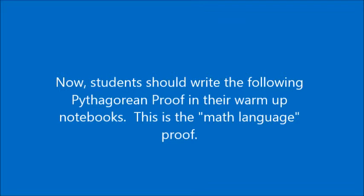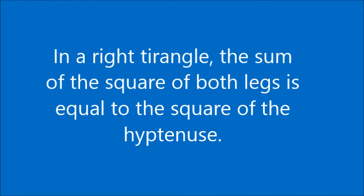Now that we have our class definition of the proof down, I would like you please to write down this proof. This is a proof that is written in that math language that we talk about quite often in here. What you should also write down in your notebook is this sentence. In a right triangle, the sum of the squares of both legs is equal to the square of the hypotenuse. This is the same thing as when we say that if you add the square of both legs, that equals the square of the third longer leg in the right triangle. We've just used our vocabulary words of sum, legs, and hypotenuse in this math language definition. So please make sure that you record this in your notebook now.